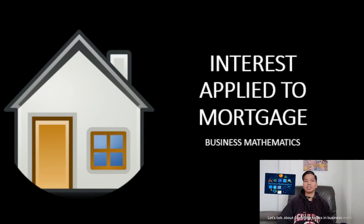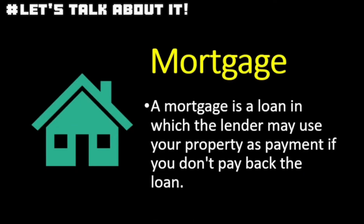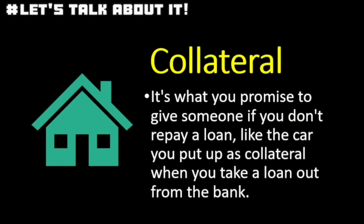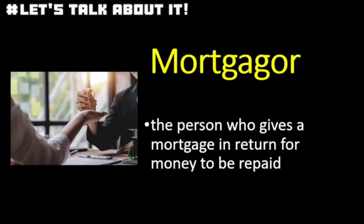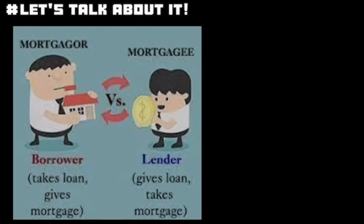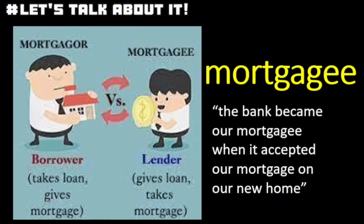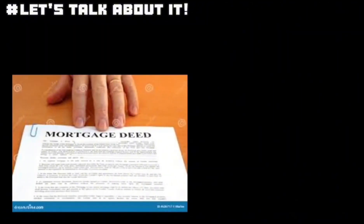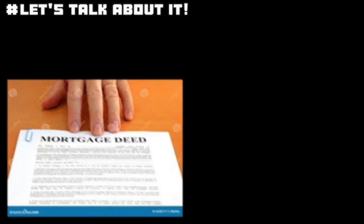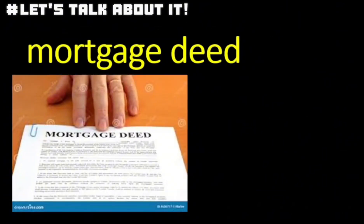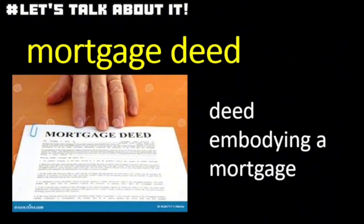Let's talk about one of the topics in business math for Grade 11 students — one of the big players in the loan game: the mortgage. A mortgage is a loan in which the lender may use your property as payment. This is when you use your property, like your house, as collateral to secure a loan. The person borrowing the money is called the mortgager and the folks giving you the money are the mortgagees. The legal document that makes it all official is called a mortgage deed — it's like a promise that you'll pay back the money, and if you don't, they take your property away.